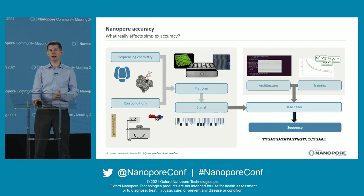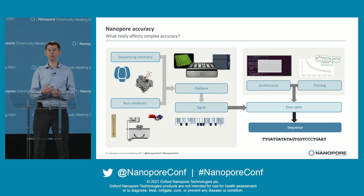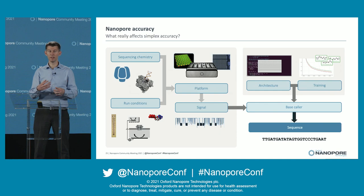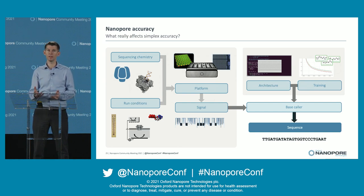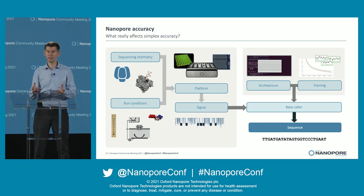What affects accuracy? You have the Nanopore, the enzyme, and the run conditions — voltage, temperature, salt conditions. All of those things come together and are acquired as a signal on the platform. The platform provides high-performance, sensitive, low-noise electronics, and that signal is digitized. You then base call that signal — the base caller is a function of the architecture and training, and many if not all base callers these days are based on trainable machine learning methods.